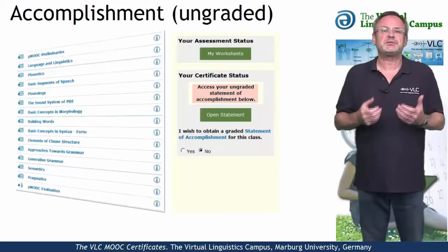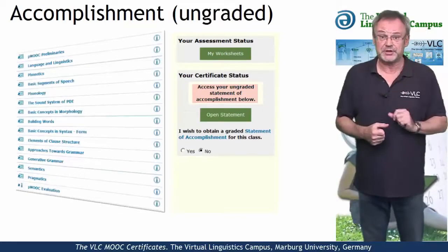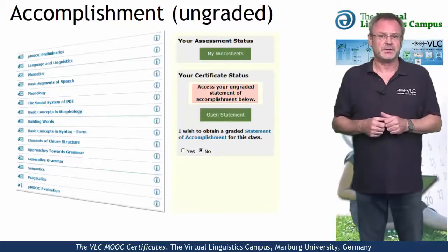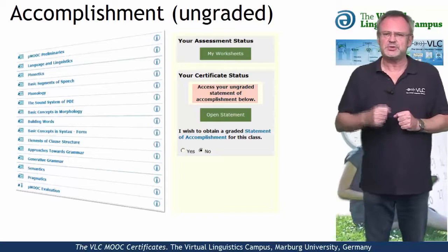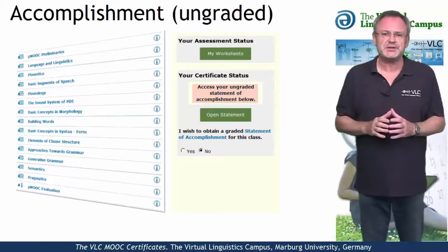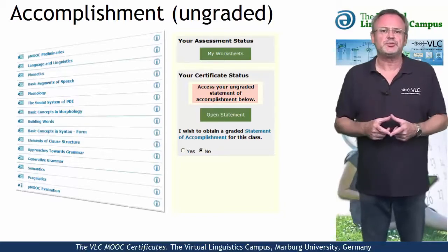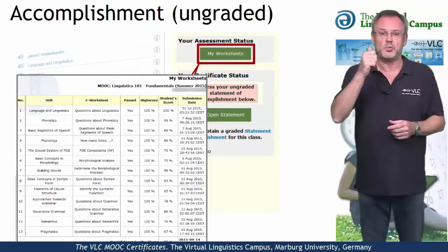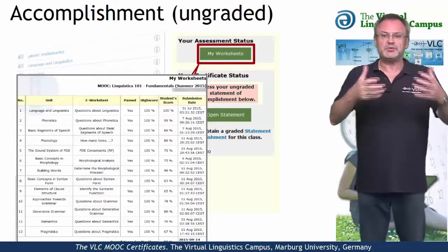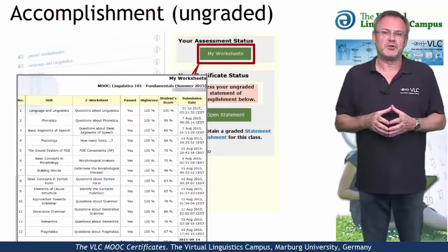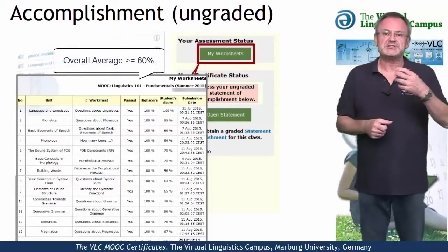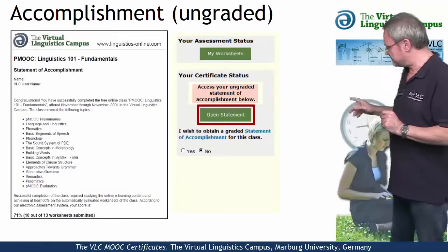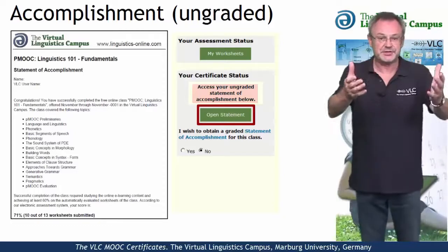The second option is the Statement of Accomplishment, also free and issued by the Virtual Linguistics Campus. To be given such a certificate, we not only want your regular participation, but we also want you to complete the Mastery Worksheets — our electronic tests, one for each unit — and achieve an overall score of at least 60%. A simple click on the Open Statement button and the certificate is yours.